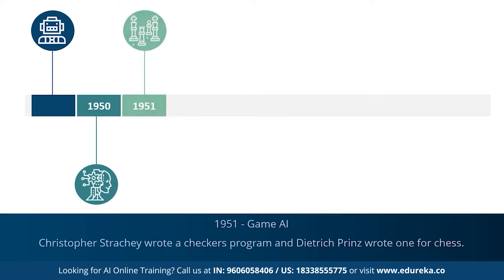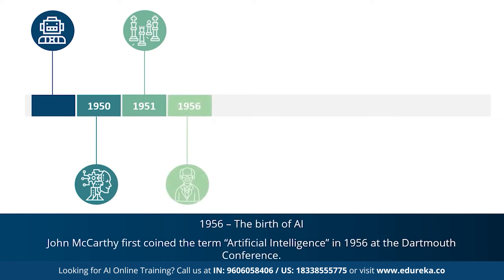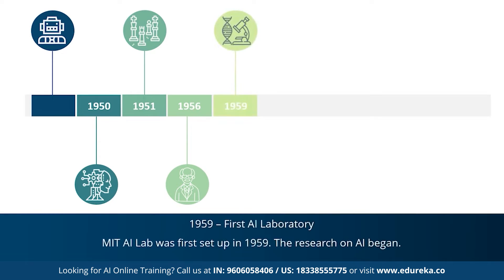1951 marked the era for game AI, where computer scientists developed programs for checkers and chess. These programs were later rewritten and improved. 1956 marked the most important year for artificial intelligence, when John McCarthy first coined the term 'artificial intelligence.' This was followed by the first AI laboratory set up in 1959 — the MIT AI lab — dedicated to the research of AI.